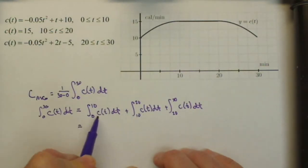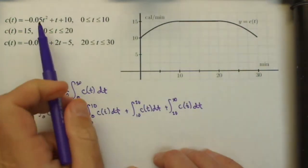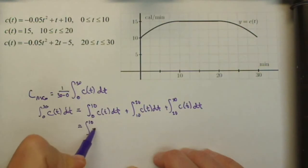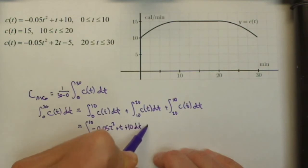Now, in part A, we calculated this. So this is already done. So let's see what these look like in terms of our formulas. 0 to 10, here, of negative 0.05 T squared plus T plus 10 DT. Here, it's just a constant.